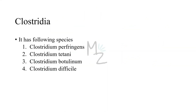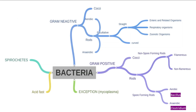The four Clostridium species are: Clostridium perfringens, Clostridium tetani, Clostridium botulinum, and the topic of today's video — Clostridium difficile. Before talking about C. difficile in detail, we should understand how bacteria are classified.